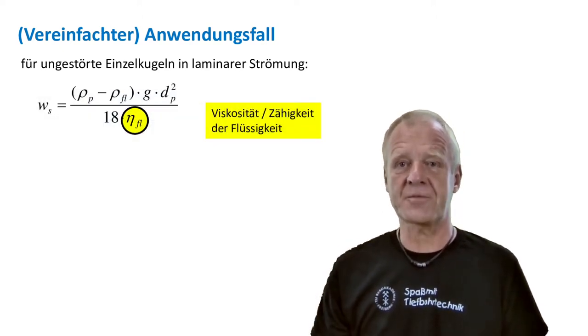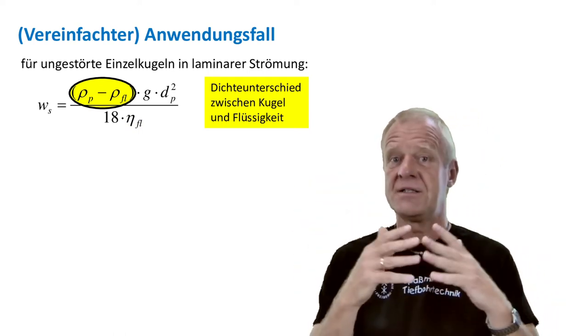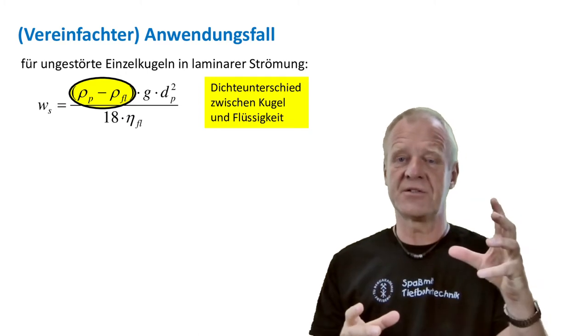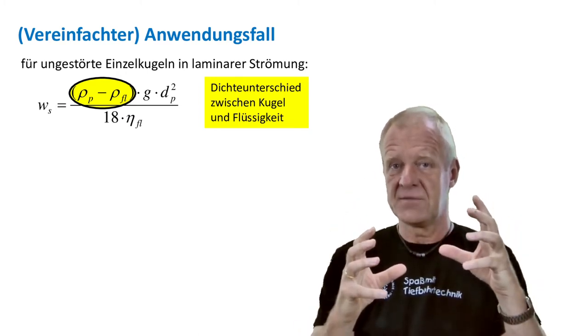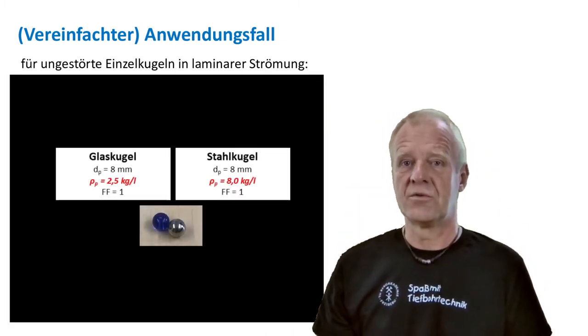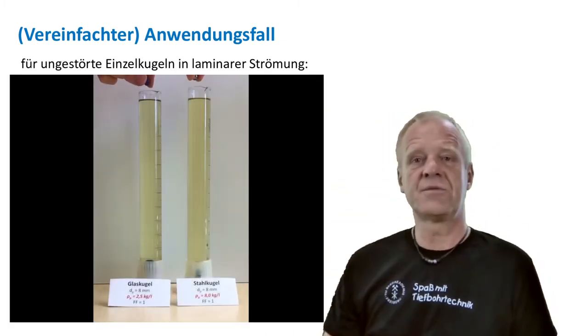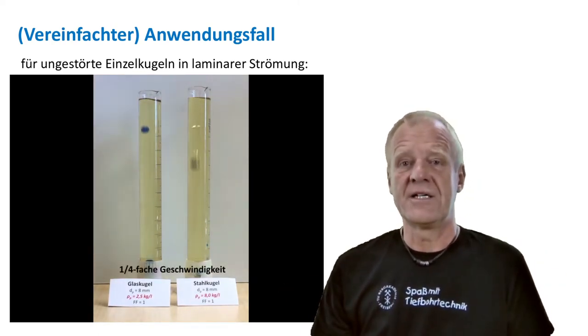In the numerator of the equation, we have the density difference between the cutting and the surrounding fluid. The heavier the particle is compared to the liquid, the faster it will sink in the fluid. So we can see that when we drop two balls of different densities, steel and glass, in the same fluid, the steel ball drops much faster because it has a higher density.